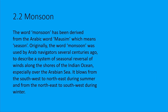Now we will look at the meaning of monsoon. Monsoon comes from the Arabic word 'Mosim'. Mosim means season in Arabic. It was first used by Arab navigators.